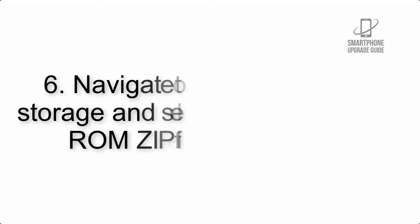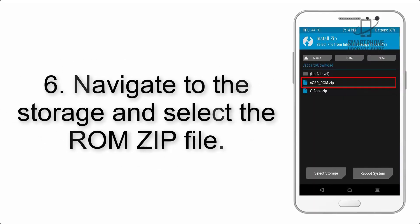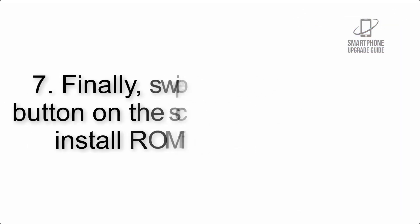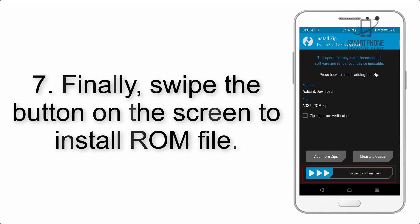Step 6: Navigate to the storage and select the ROM zip file. Step 7: Finally, swipe the button on the screen to install the ROM file.